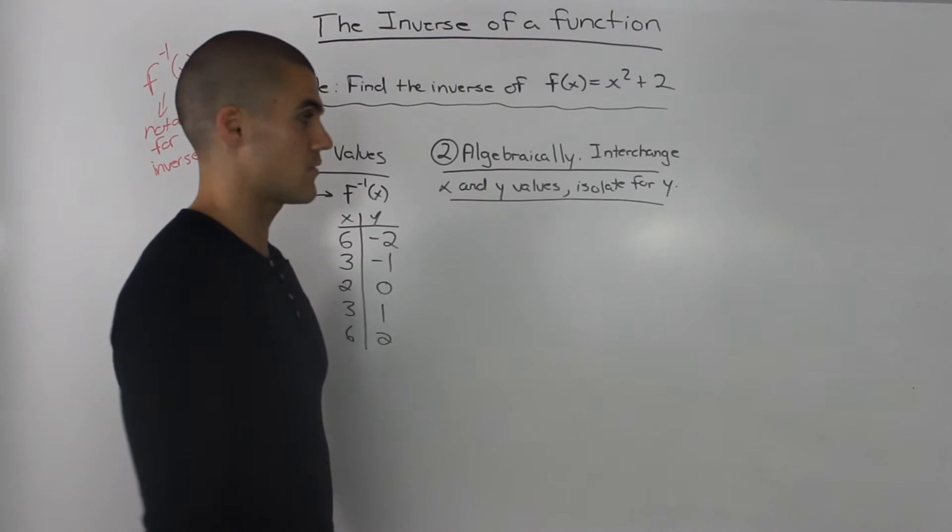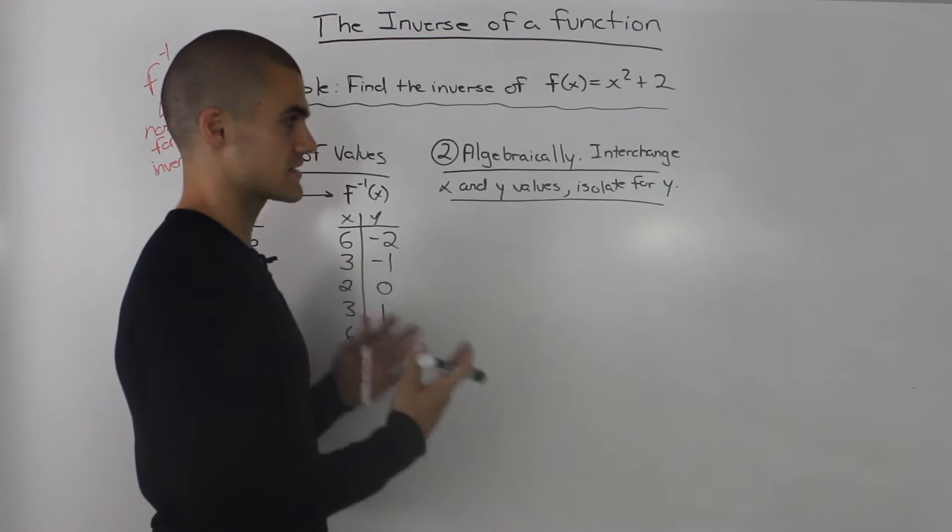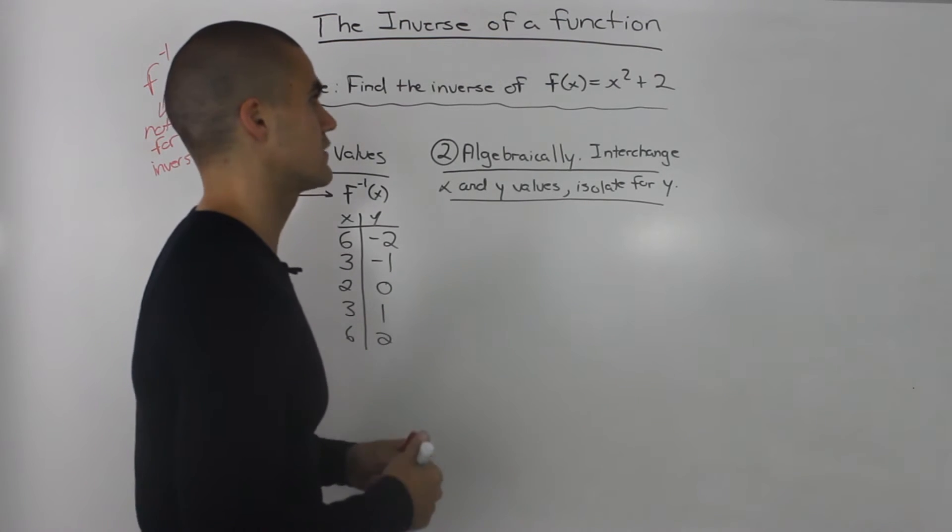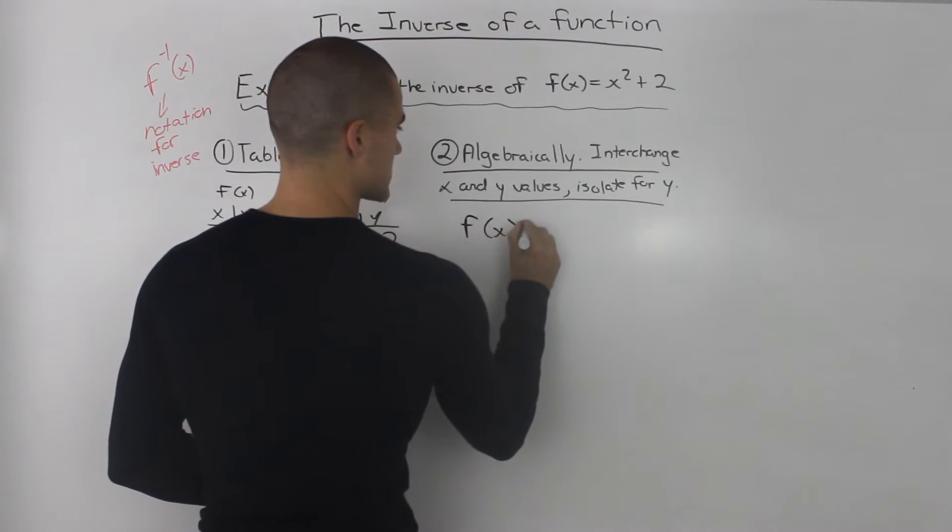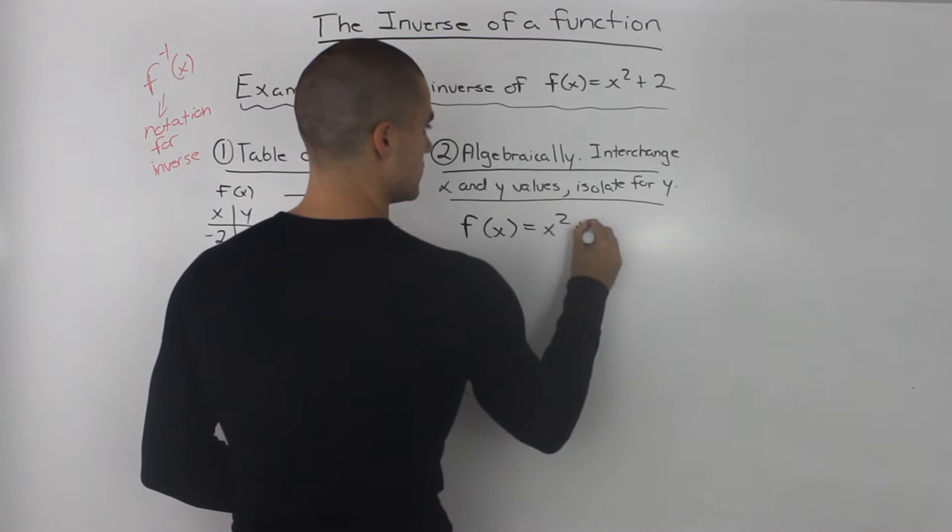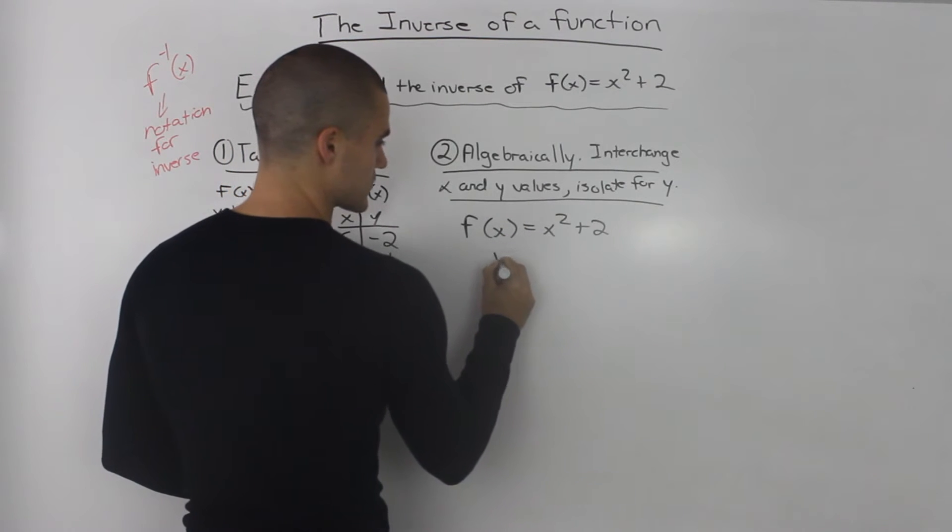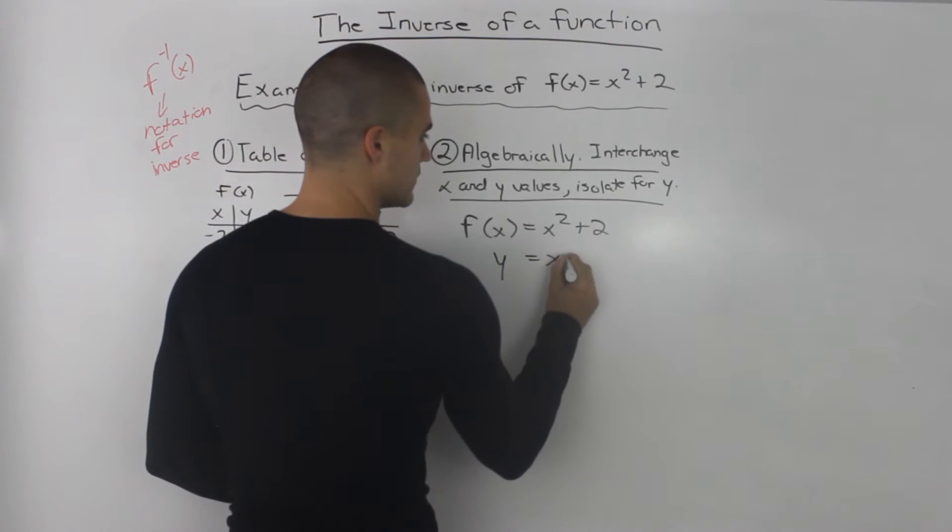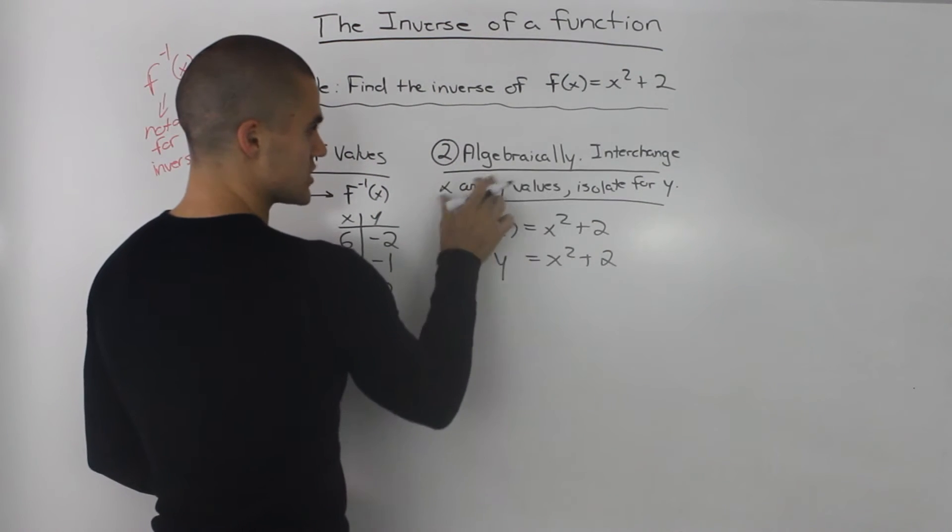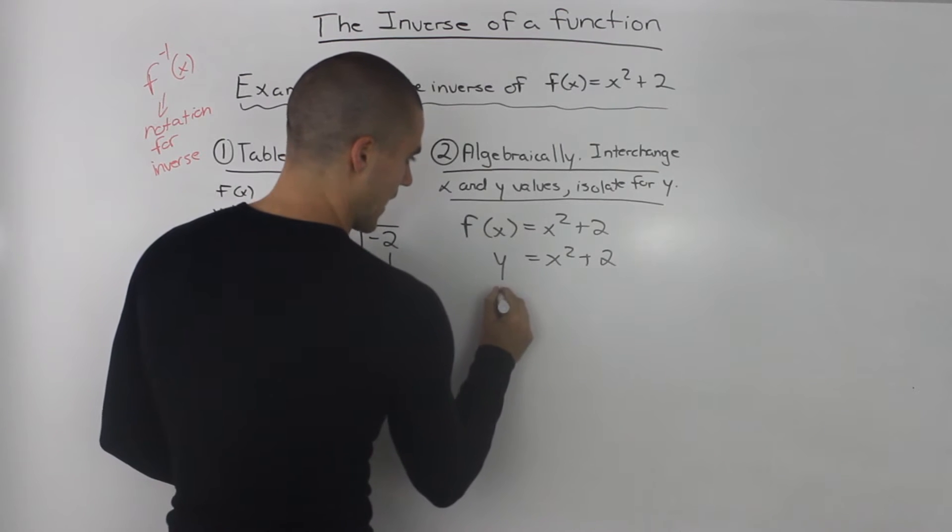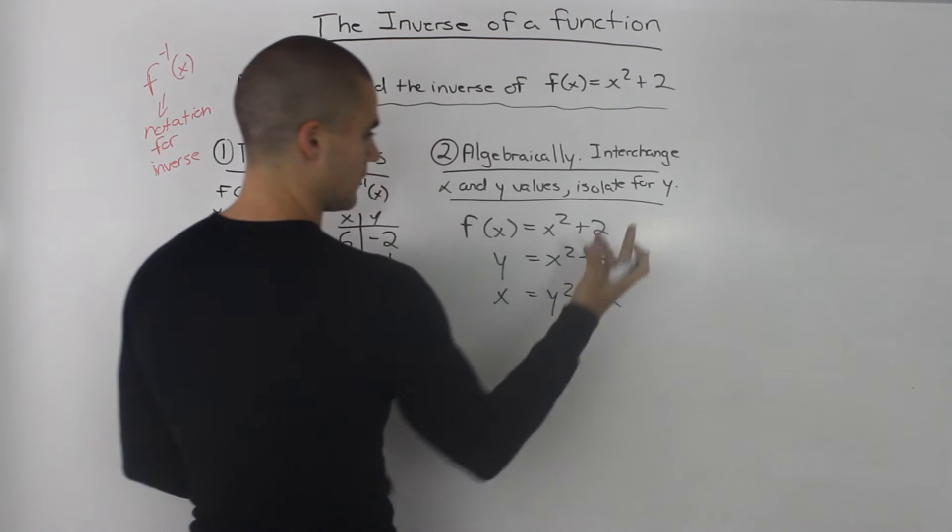The second way that we can find the inverse is algebraically. What we would do is we would interchange the x and y values and then isolate for y. So let's rewrite our function f(x) = x² + 2. And as we've mentioned before, f(x) we could also rewrite as y or vice versa. So we interchange the x and y values.